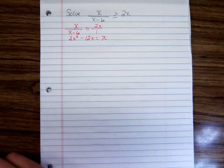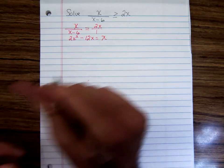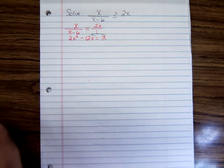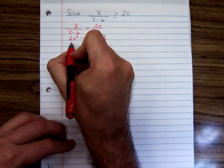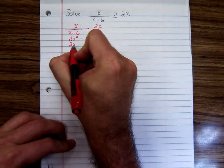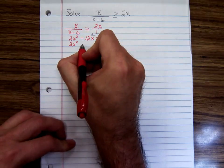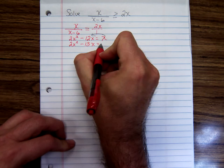So let's get a 0 on one side and factor. I'll get a 0 by moving that x over which means subtract x. So we'd have 2x squared, negative 12x minus 1x would be negative 13x.